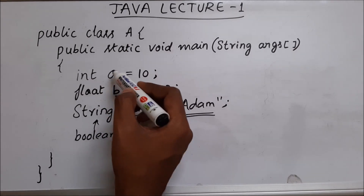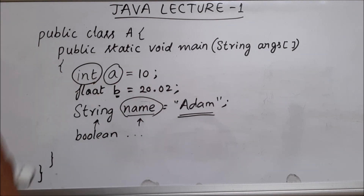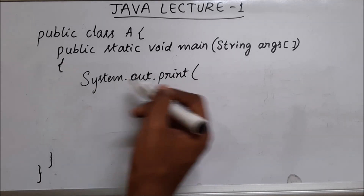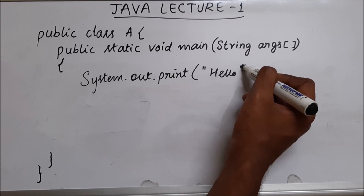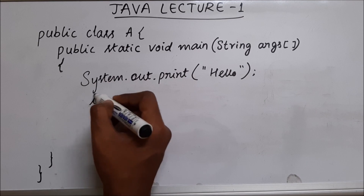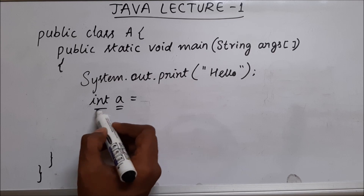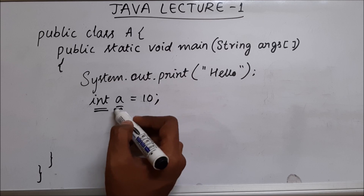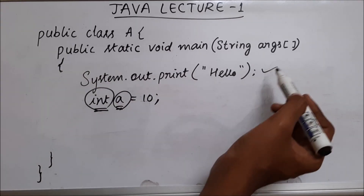For now we have understood what a variable is and what a data type is. Quick recap: in this video we saw how to print anything to our output screen using system.out.print. We saw how to declare a variable and specify the type that the variable can store. We saw variables, data types, and how to print something.